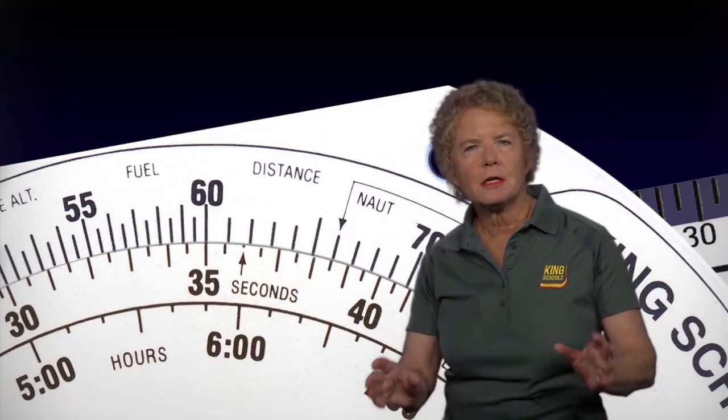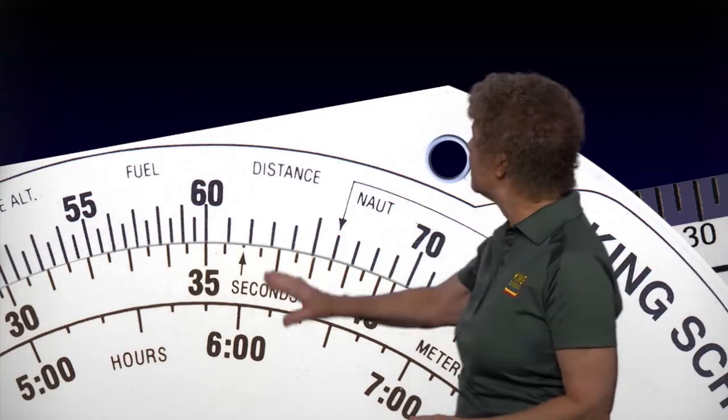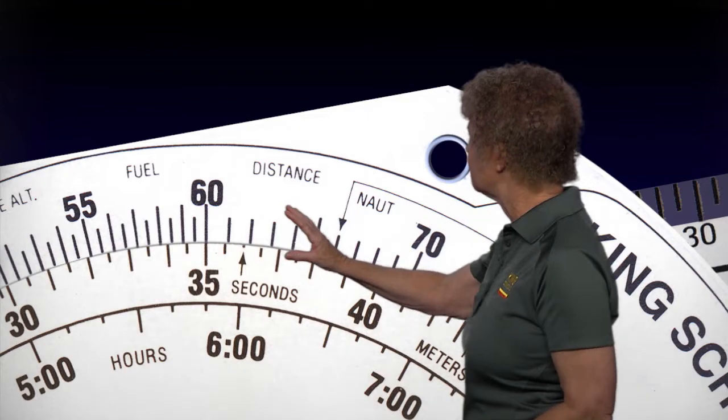basically what you use that side for is to multiply and divide. It's basically a circular slide rule.